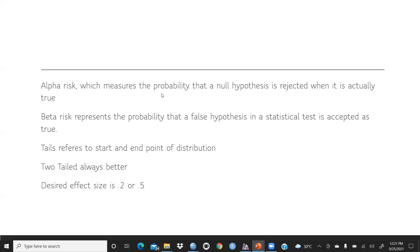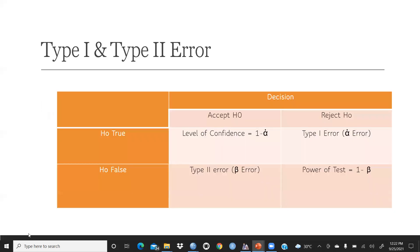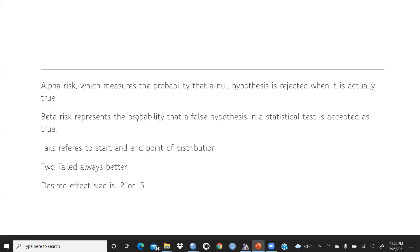Alpha risk measures the probability that a null hypothesis is rejected when it is actually true. Beta risk represents the probability that a false hypothesis in a statistical test is accepted as true. Tails refer to the start and end points of a distribution — two tails is always better.